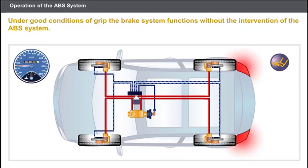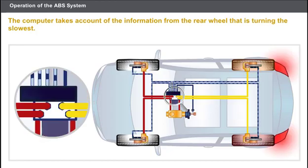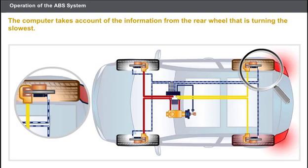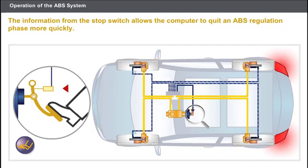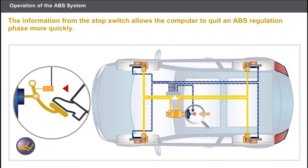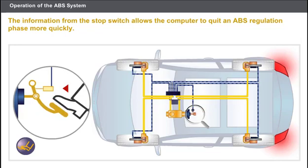The front wheel solenoids are controlled separately, while the solenoids for the rear are controlled simultaneously. The rear axle must be braked using a force lower than the force used for the front axle. The computer uses the electronic brake distributor logic and takes account of the information from the rear wheel that is turning the slowest — this function is called SELECT LOW. In addition to lighting the brake lights under braking, the stop switch sends a signal to the ABS computer. The information from the stop switch allows the ABS computer to determine the start of braking in order to anticipate braking regulation. When the pedal is released, the stop switch information allows the computer to quit an ABS regulation phase more quickly.